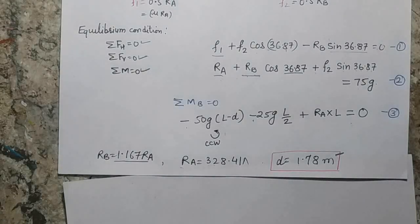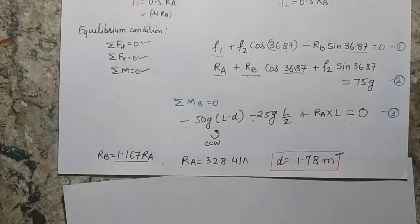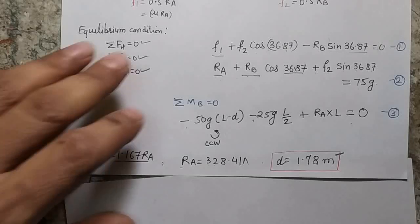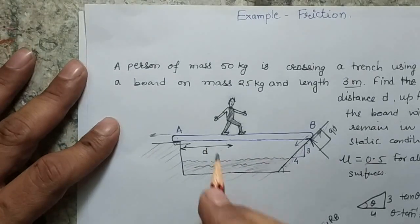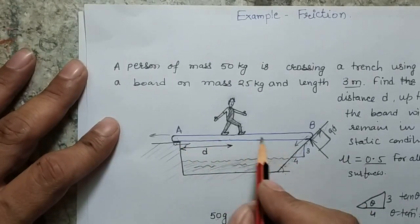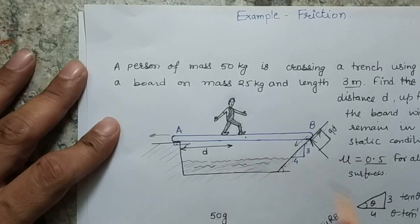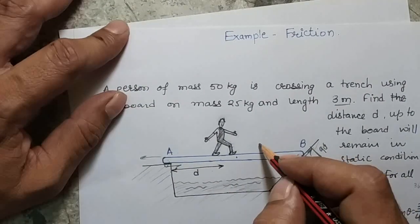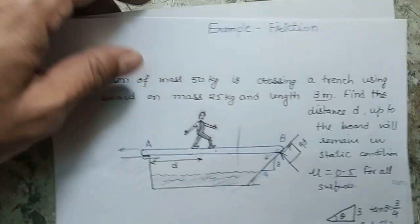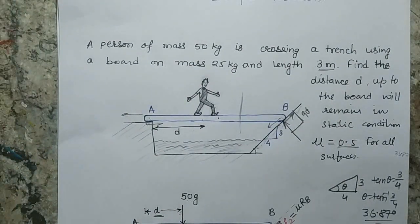I have solved the problem, but there may be calculation mistakes, so please verify by solving it yourself. The philosophy and equations remain the same; only the arithmetic may differ. The answer is d = 1.78 meters. The total board length is 3 meters with the center at 1.5 meters, so the person can safely walk up to 1.78 meters. Beyond that point, the board will slide and the person will not be able to cross the complete trench.